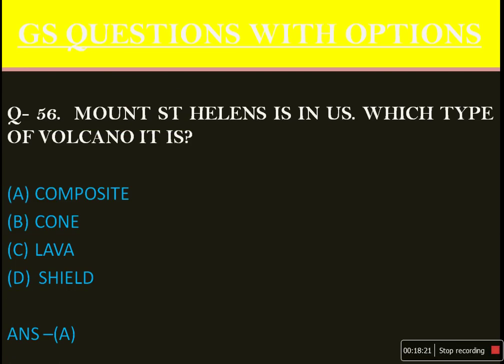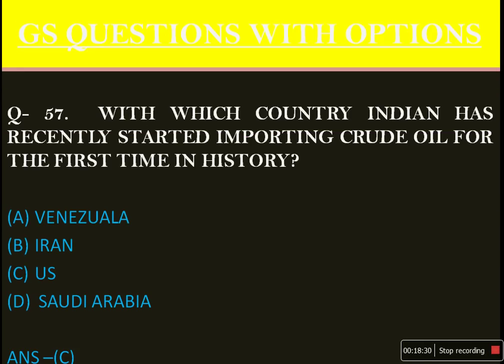Mount St. Helens is in the US — which type of volcano is it? The answer is option A: it is a composite type of volcano. With which country has India recently started importing crude oil for the first time in history? The answer is option C: USA.